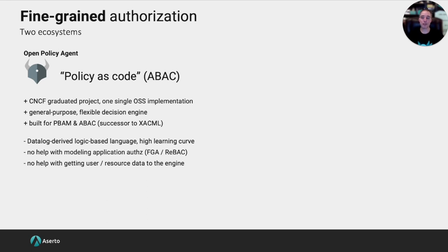There's a lot to like about OPA. First, it's a CNCF-graduated project — CNCF is the closest thing we have to a standards body in the cloud-native community. There's a single open source implementation. It's a general purpose flexible engine tailor-made for policy-based access management. It is the successor to XACML — many people say XACML is dead or dying, and OPA is going to replace it. Some minuses though: the language, called Rego, derives from Datalog and has a high learning curve. OPA brings no opinions with it, so you're left to design your authorization model from scratch, which is powerful but like building in assembler. And OPA has a policy plane but not a data plane, so bringing data to the engine is an exercise left to the user.